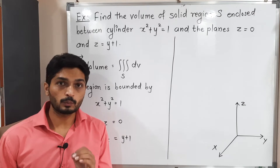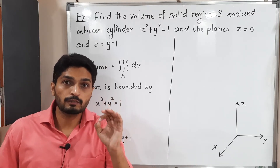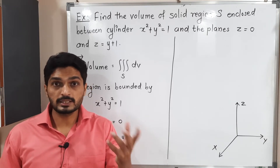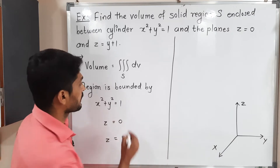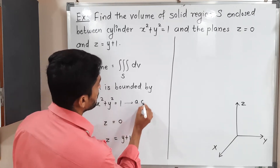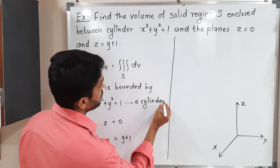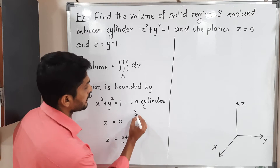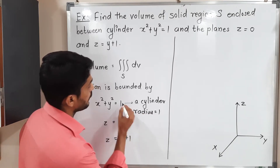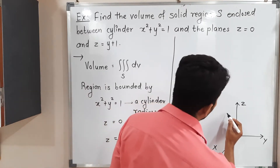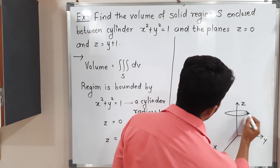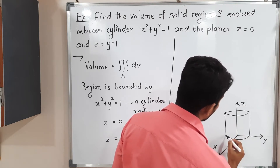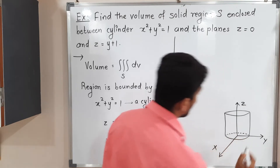The region is bounded by the first curve x² + y² = 1. In the xy-plane, this is a circle with center at the origin and radius 1. But in three-dimensional xyz space, this is a cylinder around the z-axis with radius 1.